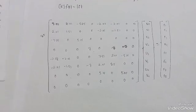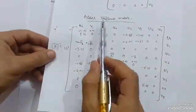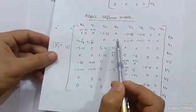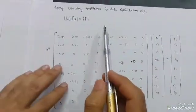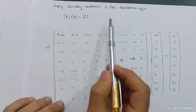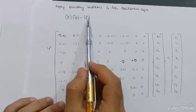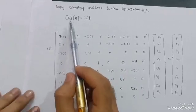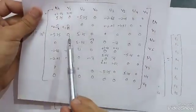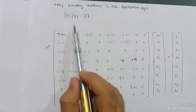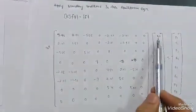Welcome, friends. In the last part I stopped at the global stiffness matrix — the value of K. Now we apply boundary conditions and the equilibrium equation: K into Q equals F. We already calculated the value of F on this page, and we put it in place of K. Q represents the nodal displacements.